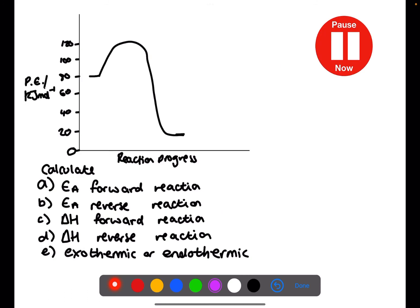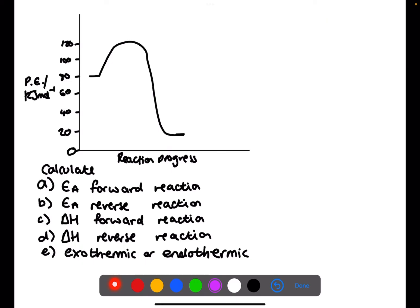Pause the video now and try this question. For part A we are calculating the activation energy for the forward reaction — that is the energy from the reactants up to the very top. We have 120 at the top and 80 at the reactants, so 120 minus 80 gives an activation energy of 40 kilojoules per mole.